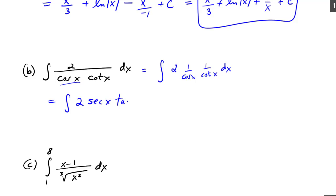and then a 1 over cotangent x is tangent, so I get 2 secant x tangent x, and I recognize that this should integrate to 2 times secant. Secant tangent integrates to secant x plus C.